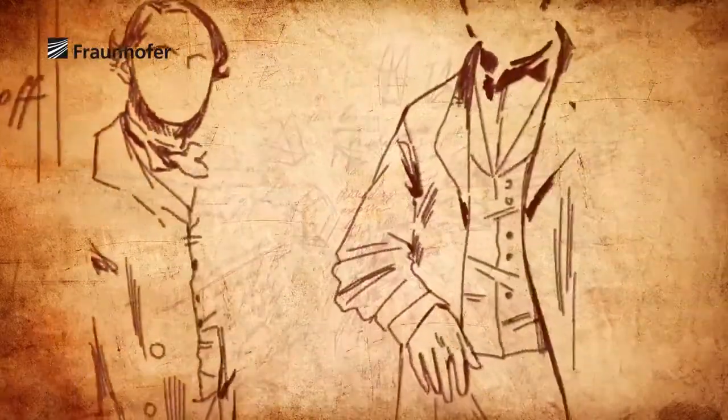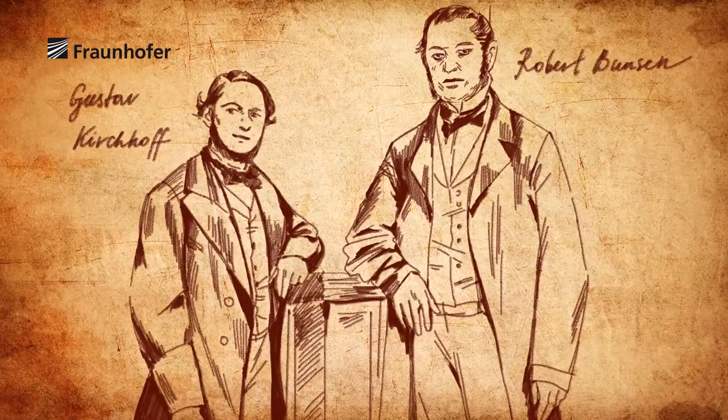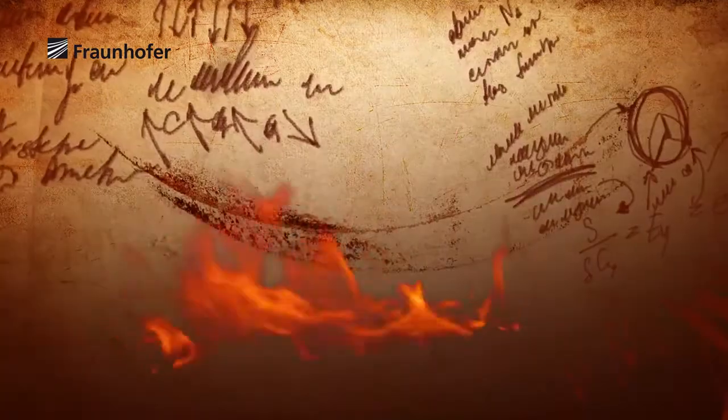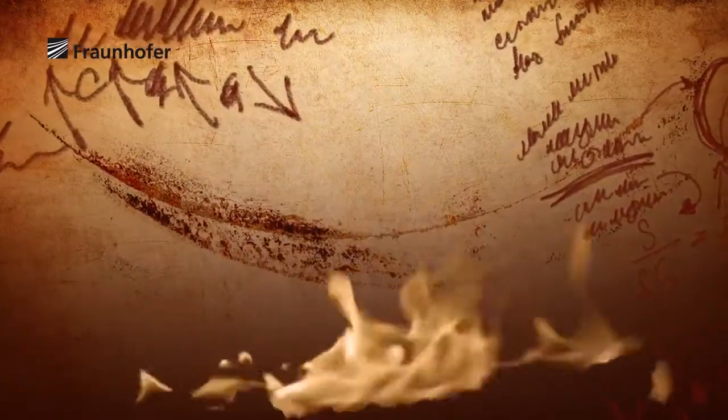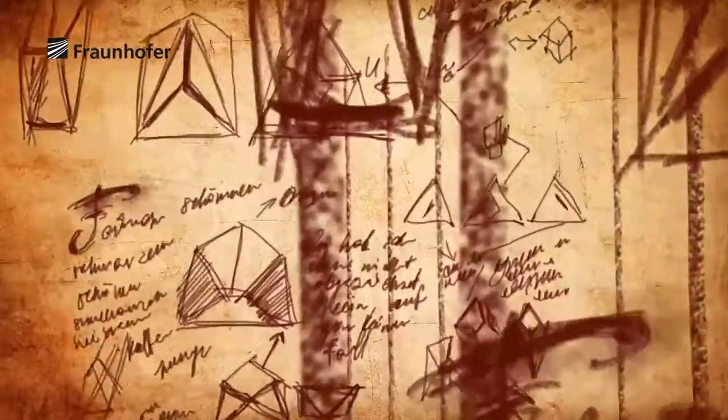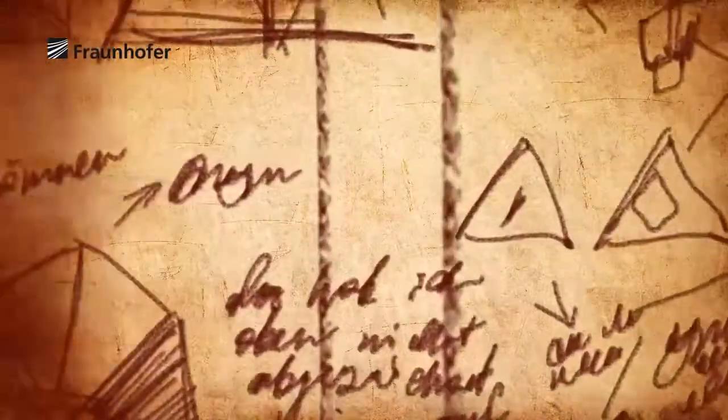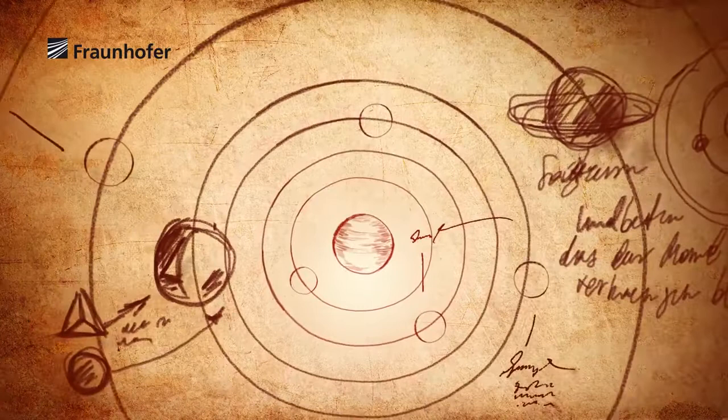It was not until 1860 that Gustav Kirchhoff and Robert Bunsen succeeded in revealing the secret of the dark lines. By evaporating mineral chemicals, they produced colored flames. During the investigation, it became clear that each of these chemicals left its own fingerprint in the form of lines, similar to a barcode. Some of these barcodes are also found in the dark lines of the solar spectrum. The researchers found there, among others, the codes for iron and sodium. They concluded that these minerals must also occur on the sun.